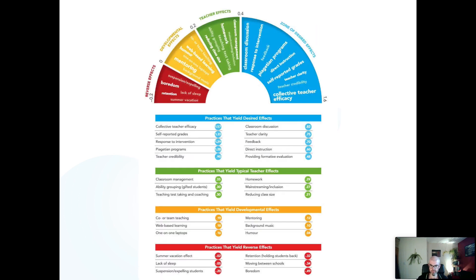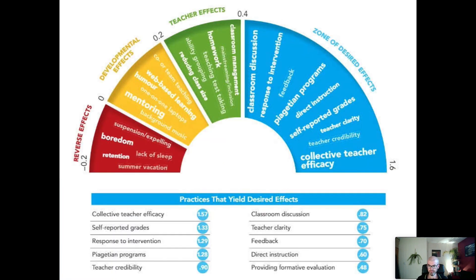You end up with diagrams like this - here is one taken from the Visible Learning website. You can see some educational activities: the summer vacation has a negative effect on learning, whereas teacher clarity has a positive effect. Hattie summarises the size of these effects using standardised effect sizes. The negative ones are apparently minus 0.2, while others are much bigger. I'll say more about what these numbers mean in a moment.